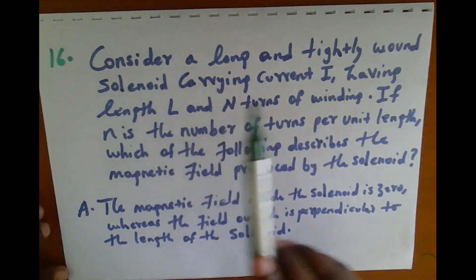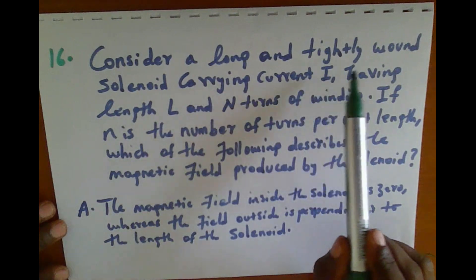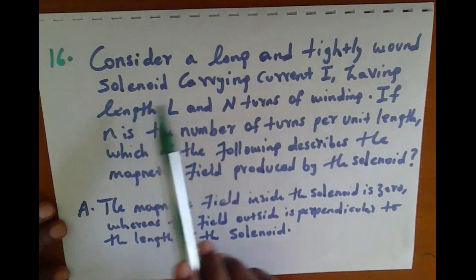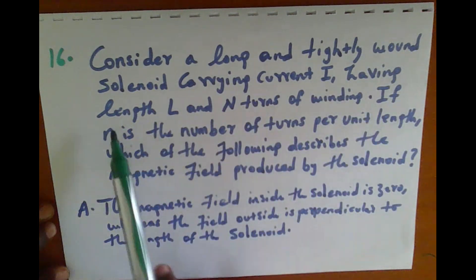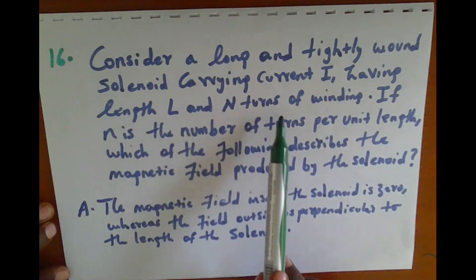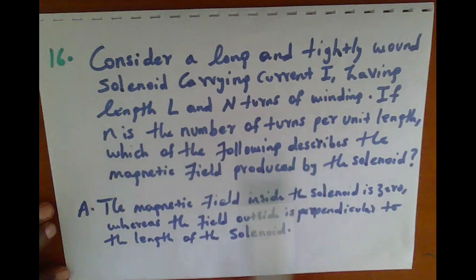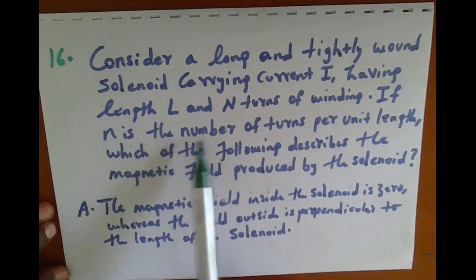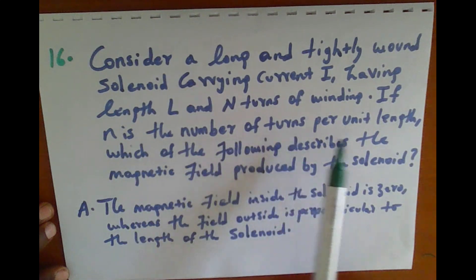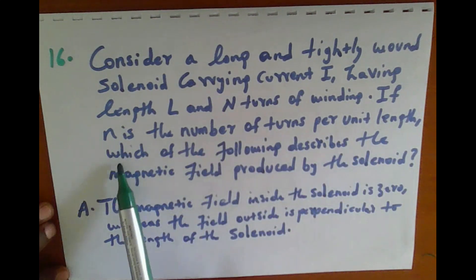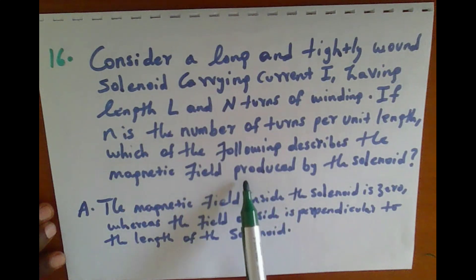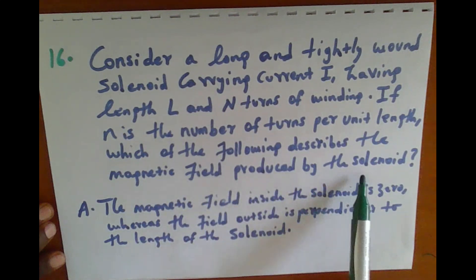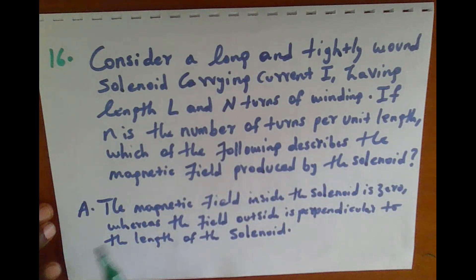Question number 16. Consider a long and tightly wound solenoid carrying current I, having length L and N number of turns. If n is the number of turns per unit length, each of the four options describes the magnetic field produced by the solenoid.